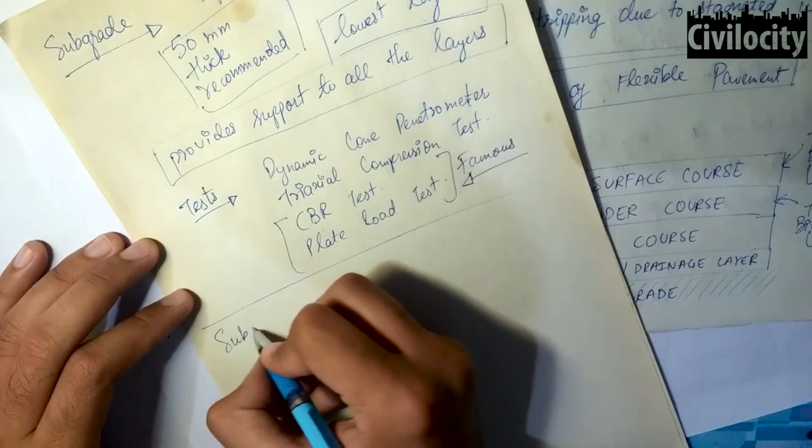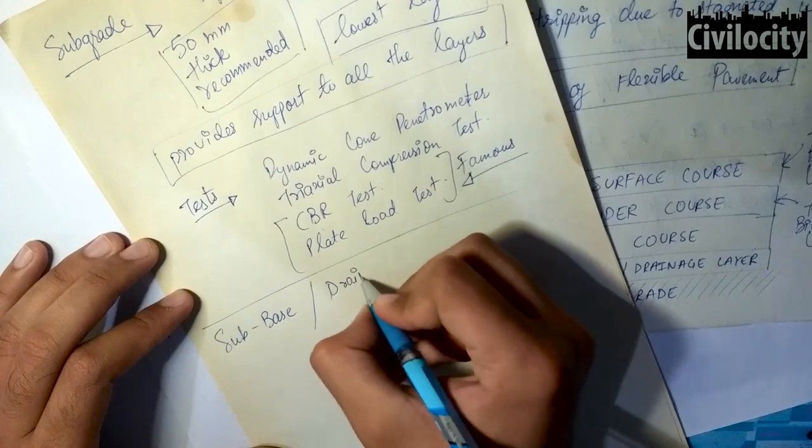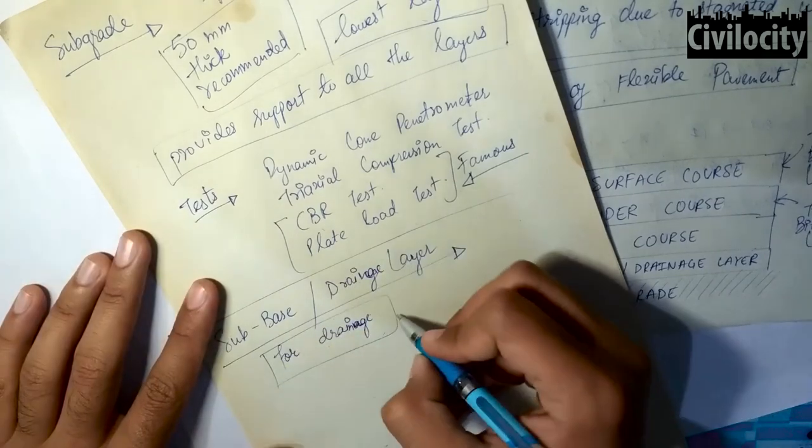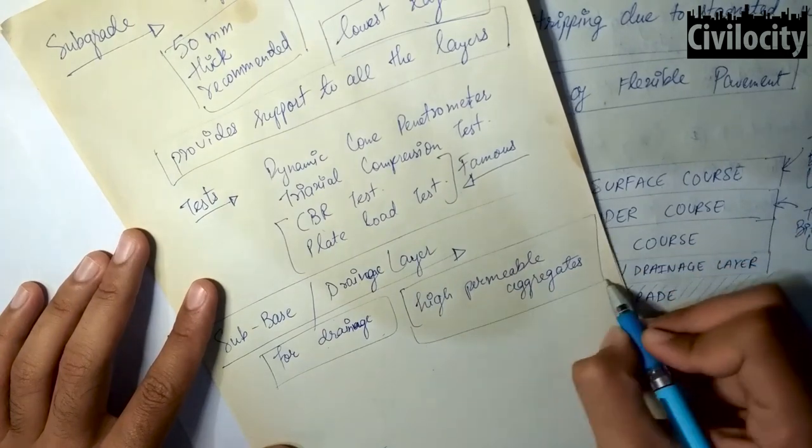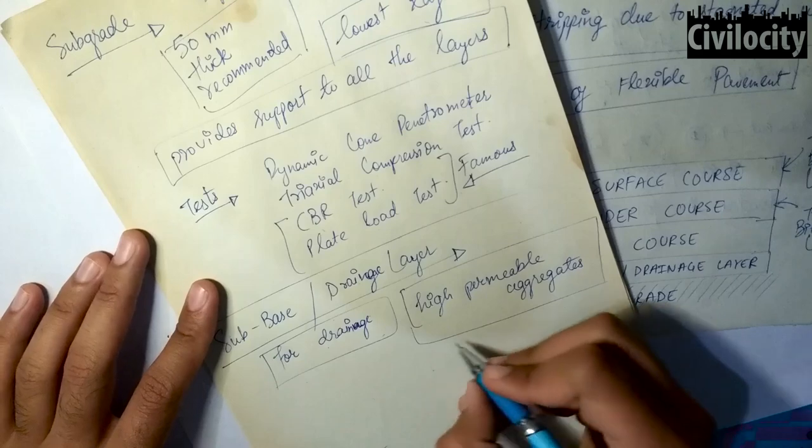Our second layer from the bottom is the sub-base or drainage layer. This layer is particularly used for drainage purposes and in this layer high permeable aggregates are used. Since the aggregates are highly permeable, they possess very low strength.